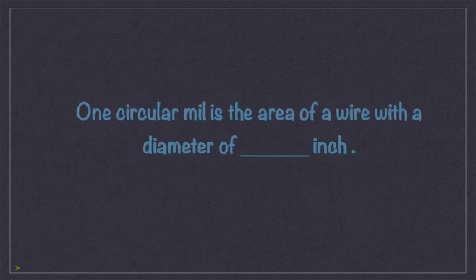One circular mil is the area of a wire with a diameter of 0.001 inch.